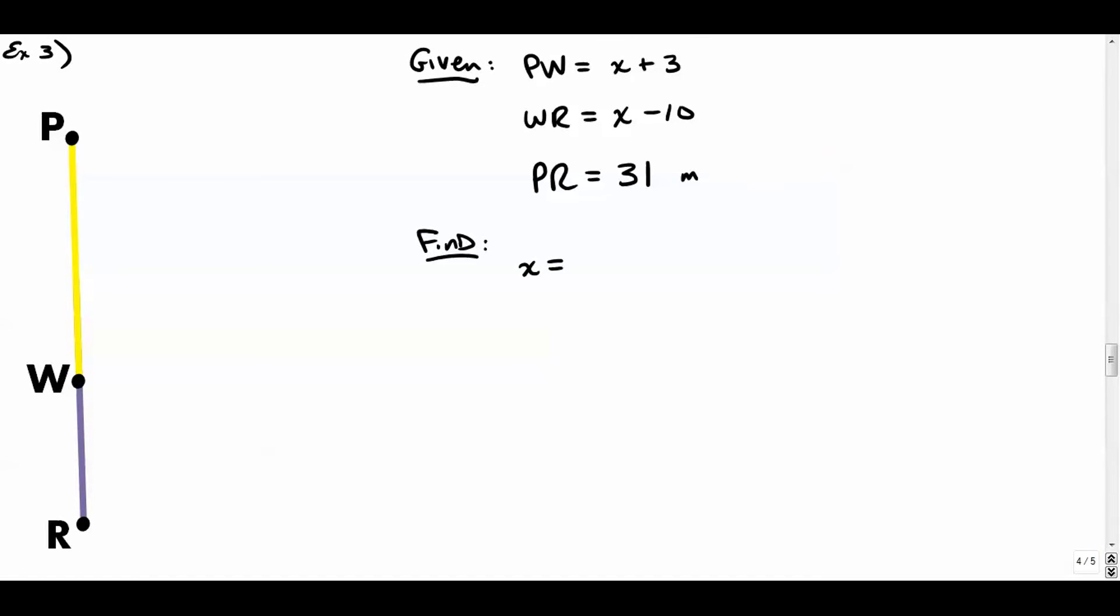Our given information is listed right here. And it's giving us the fact that the yellow is X plus three. The purple is X minus 10. And the entire thing is 31. And our job is to find X. So the whole thing, the length of Segment PR is equal to the length of Segment PW plus the length of Segment WR. The length of Segment PR is given to be 31. The length of Segment PW is given as this algebraic expression. And the length of Segment WR is given as this algebraic expression.